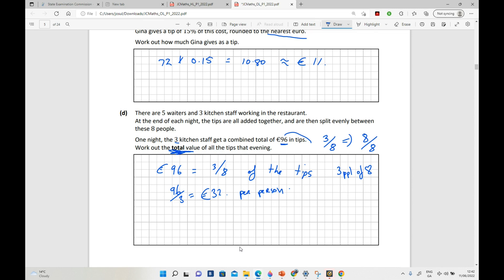But I've been asked for the total value, so in fact what I need to do then is multiply that by eight people, which is going to give me 256 euro for total tips that evening. Okay, so that's your answer.